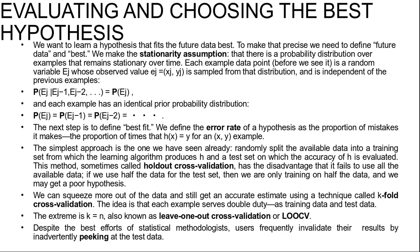We can squeeze more out of the data and still get an accurate estimate using a technique called k-fold cross-validation. The idea is that each example serves double duty as both training data and test data. First we split the data into k equal subsets, then perform k rounds of learning. On each round, 1/k of the data is held out as a test set and the remaining examples are used as training data. The average test score across k rounds should be a better estimate than a single score, and popular values for k are 5 or 10.